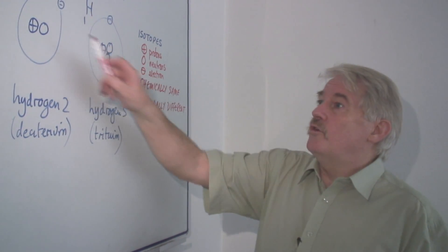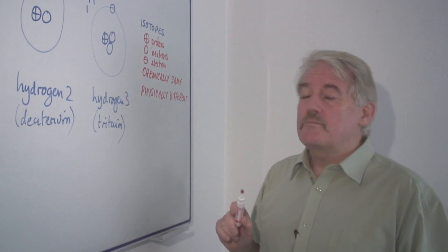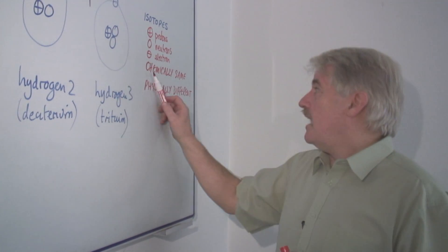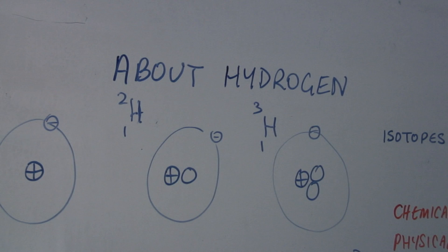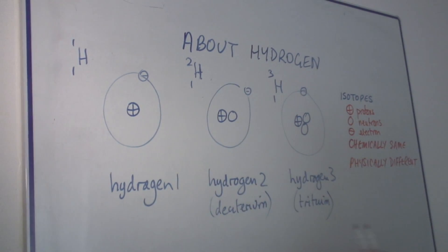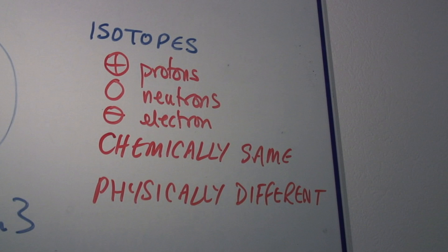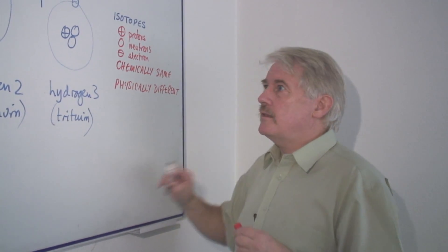Therefore, we have three different types of hydrogen, and chemically they are identical. You can have water made of hydrogen one, water made of hydrogen two, water made of hydrogen three. You can also have water made partly of hydrogen one and hydrogen two. So these all exist. Chemically they are the same — they behave in the same way, they react in the same way — but physically, they're different.